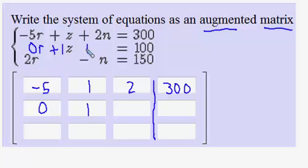There's no variable n, so you can think of that as zero n. We'll put a zero here. And then the constant's 100.